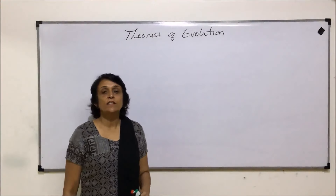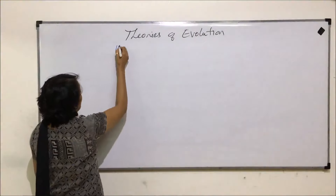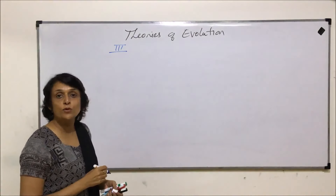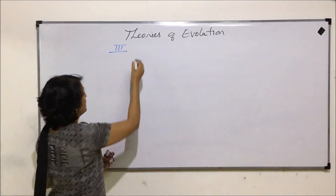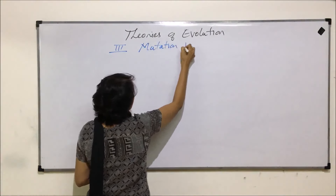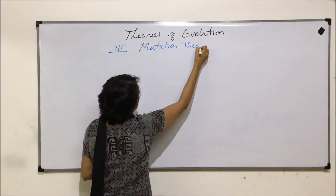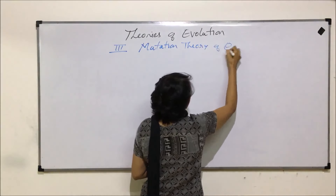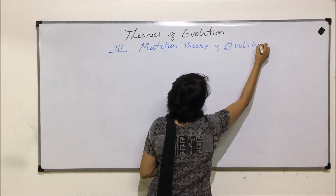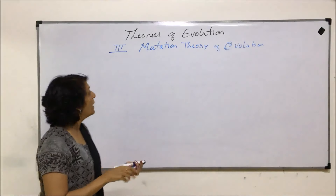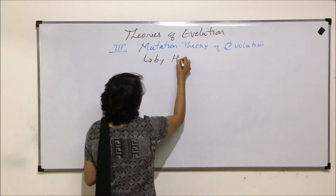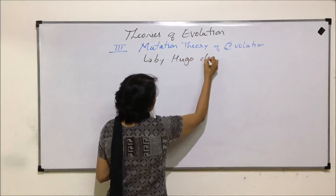Let us talk about the third theory, which is the Mutation Theory of Evolution. It was proposed by Hugo de Vries.